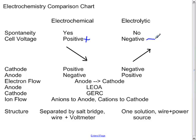An electrolytic cell voltage is negative. On your table of reduction potentials, if you circle the reactants for an electrochemical cell, you should get a downhill reaction — this helps you remember that spontaneous things like to roll downhill. For an electrolytic cell, it should go uphill on the table, helping you remember that nothing likes to go up a steep hill without putting energy into it.